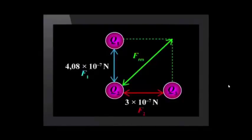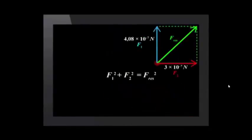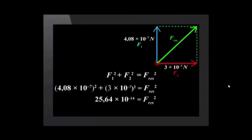Can you calculate the magnitude of the resultant force? We use Pythagoras' theorem. We substitute the values of F1 and F2 into the equation, and find that F squared is 2.56 times 10 to the minus 14. To calculate the magnitude of the resultant force, we get the square root, which is 5.06 times 10 to the minus 7 Newtons.